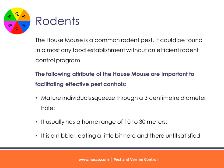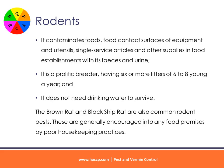Rodents. The house mouse is a common rodent pest, found in almost any food establishment without an efficient rodent control program. Important attributes of the house mouse include: mature individuals can squeeze through a 3 cm diameter hole; it usually has a home range of 10 to 30 meters; it is a nibbler, eating a little bit here and there until satisfied; it contaminates foods, food contact surfaces, equipment, utensils, and single service articles with its feces and urine; and it is a prolific breeder, having 6 or more litters of 6 to 8 young per year. It does not need drinking water to survive.